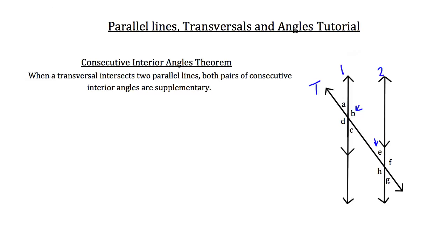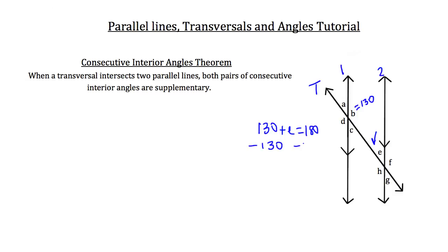When you add B and E together with consecutive interior angles and parallel lines, they're always going to add up to 180 degrees because they're consecutive interior angles. C and H are also consecutive interior angles, and those two are also supplementary because of that theorem — they add up to 180 degrees. So if angle B had a measurement of 130 degrees, you could automatically determine the value of angle E. You'd take 130 plus E and set it equal to 180 degrees, then subtract 130 from both sides, and you'd arrive at E equals 50 degrees.